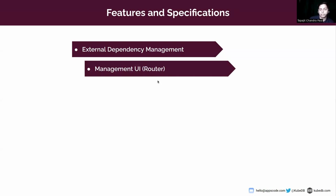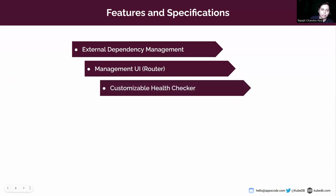Next is the management UI, which is provided through the router. When you deploy a Druid cluster with a router, there will be a service through which you can connect to the management UI and manage the Druid cluster — ingesting data, querying data, or viewing server status. Then comes the customizable health checker, which continuously checks the overall health and stability of the database after a certain period — it checks whether the database is in a ready state, pings the database, and checks read/write access by reading and writing dummy data.